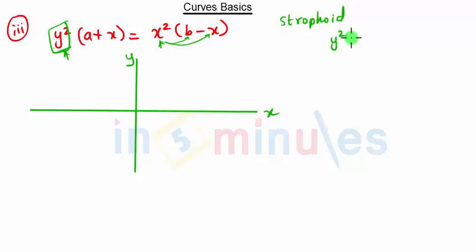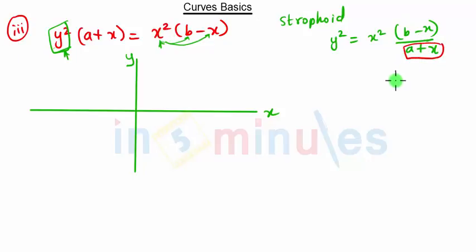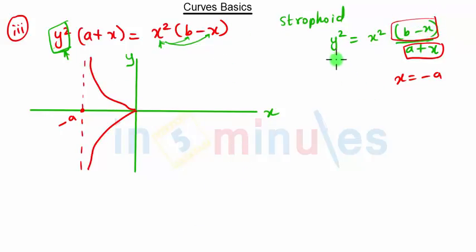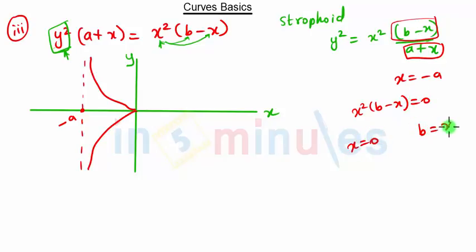We write the strophoid as y² = x²(b - x) / (a + x). Putting the denominator equal to zero gives x = -a, which is the asymptote. The curve approaches the asymptote at x = -a. In the numerator we also have (b - x), so putting y = 0 gives x²(b - x) = 0, meaning x = 0 or x = b.